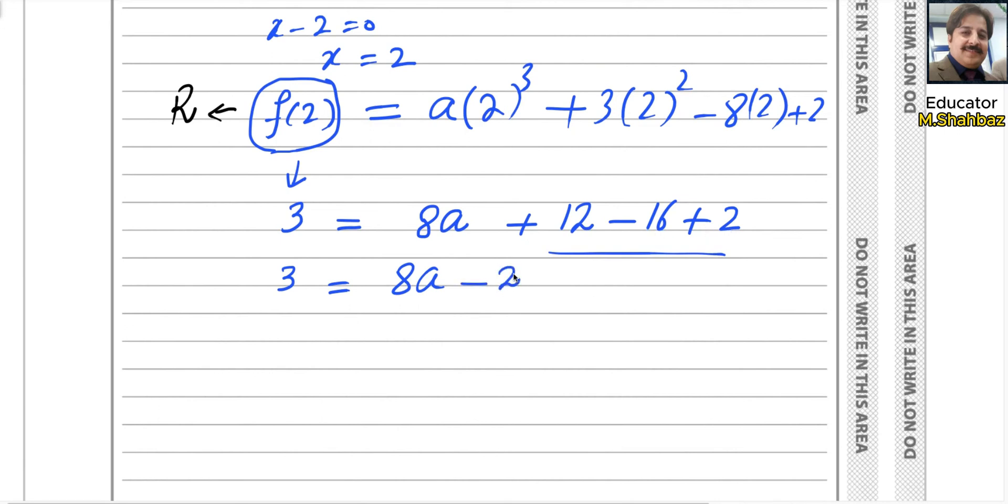So in the next step, negative 2 goes there. It will be added to 3. So we can write 5 equals 8a. A will be equal to 5 over 8. So this is the answer for question number 1.